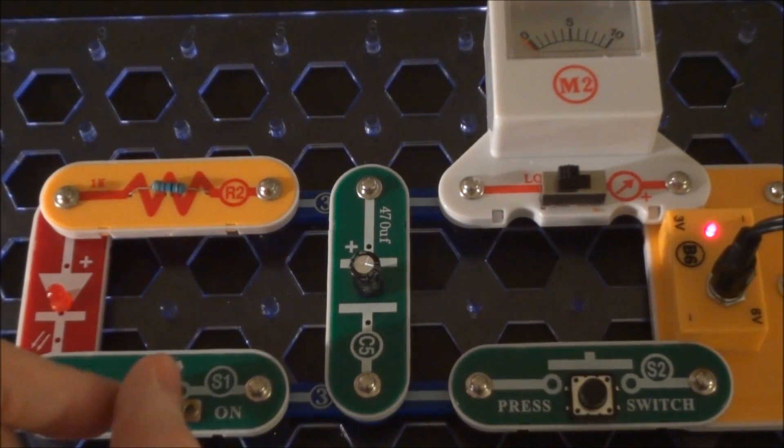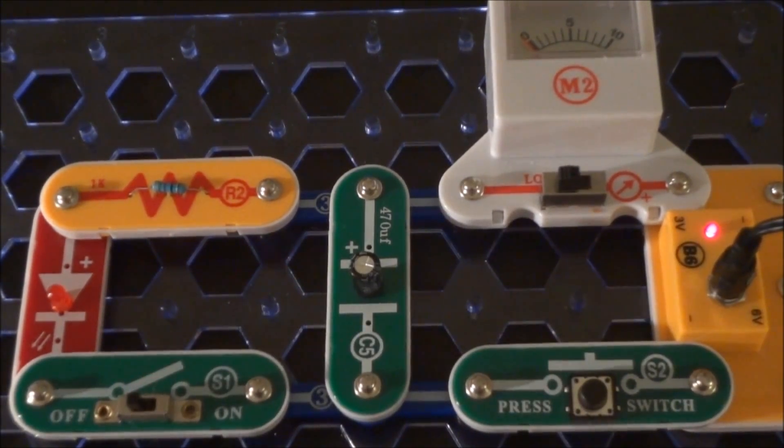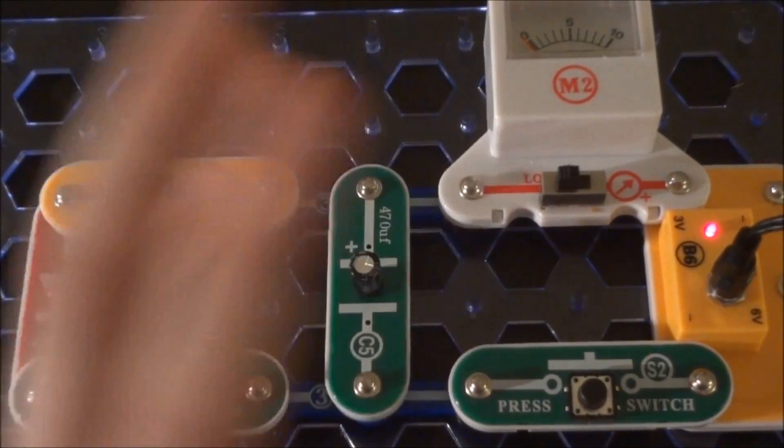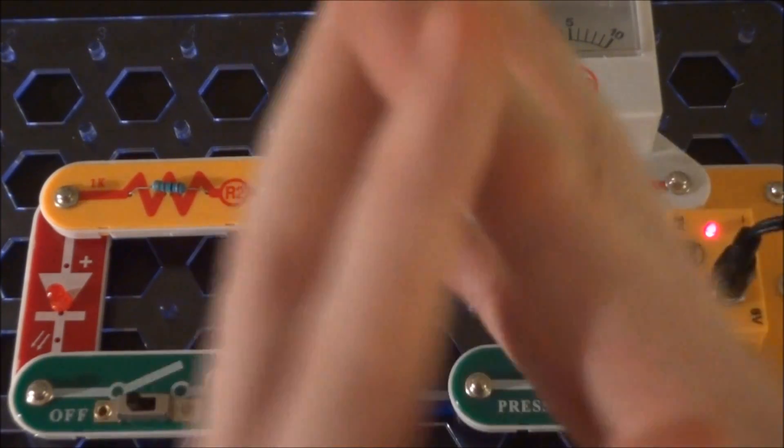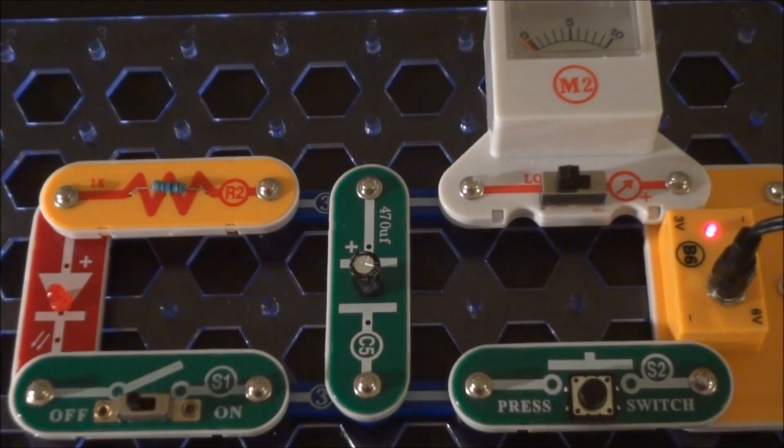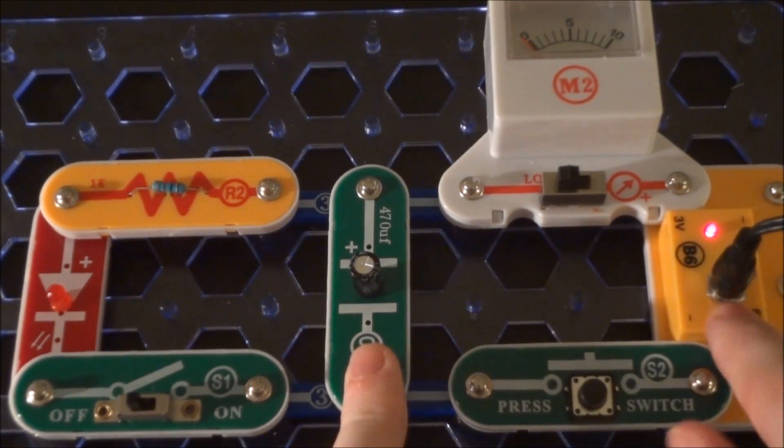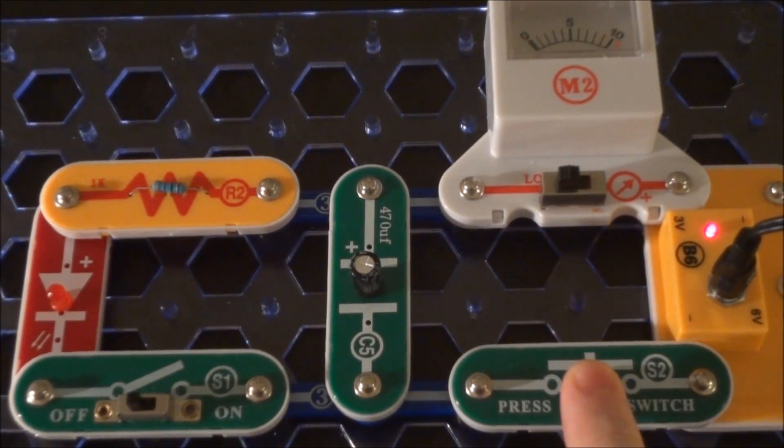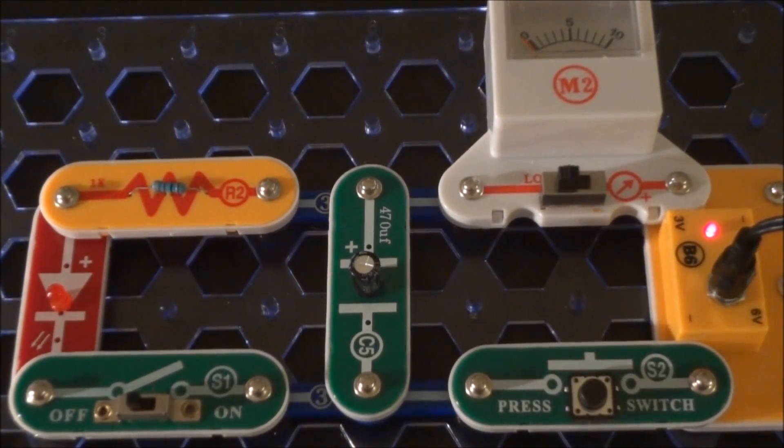Now when we complete the circuit with the capacitor, what we're doing is charging up the capacitor. The capacitor will draw current, but then as it charges up that current will decrease until it goes to zero, in which case it will be fully charged. The voltage of the capacitor will be matching the voltage source. So now we complete the circuit and the meter goes up, and then you see the needle go down to zero after a short while. I let go of the button - the capacitor is now fully charged.